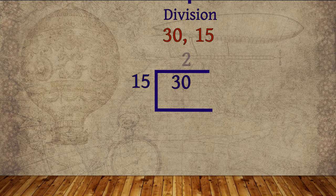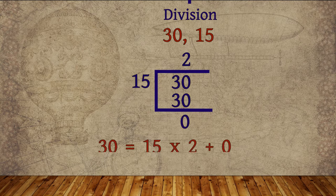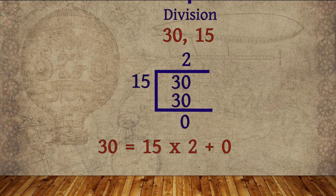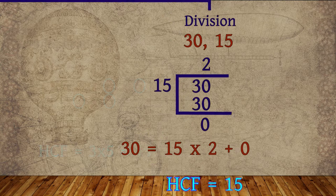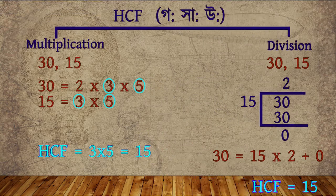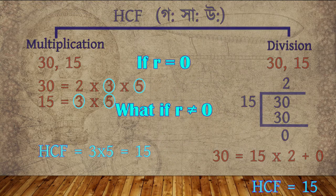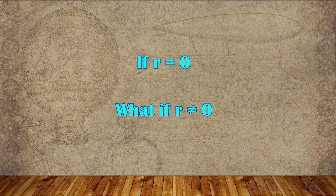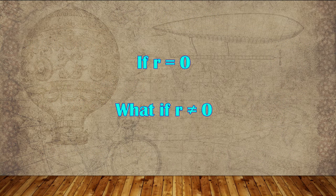dividing 30 by 15, we get 2 as quotient and 0 as remainder. That is, 30 equal to 15 into 2 plus 0. Since the remainder is 0, the divisor 15 will be the HCF. In this method, when remainder is 0, then we can find out the HCF very easily. But what will happen if r is not equal to 0?